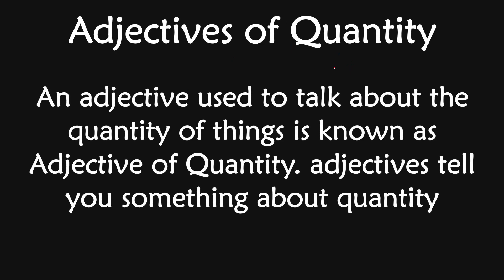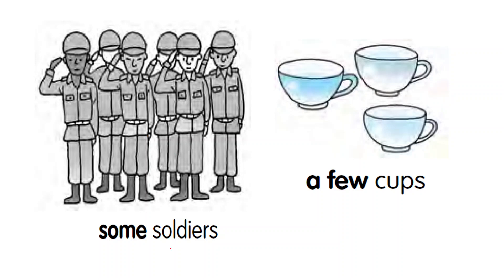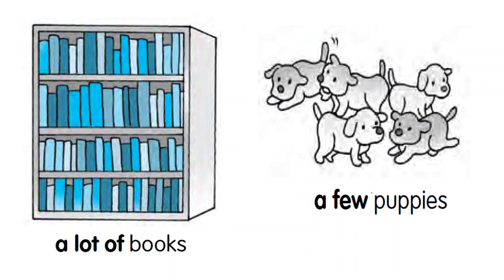Adjectives of quantity — what is the adjective of quantity? An adjective used to talk about the quantity of things is known as adjective of quantity. These adjectives tell you something about the quantity without giving you the exact number. For example: some soldiers — some is not giving the exact number but giving the idea about the soldiers. So some is the adjective of quantity. A few cups — a few is the adjective of quantity. A lot of books — a lot of is the adjective of quantity. A few puppies — a few is the adjective of quantity.